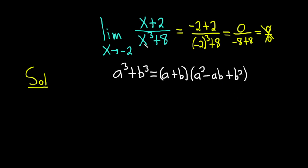So in our example, we're going to apply this to x cubed plus 8. So we have x cubed plus 8, which we can write as 2 cubed. And so this is equal to parentheses x plus 2, and then parentheses, well, you square the x, so you get x squared. Ab would be 2x, so minus 2x. And then b squared would be 2 squared, so 4.